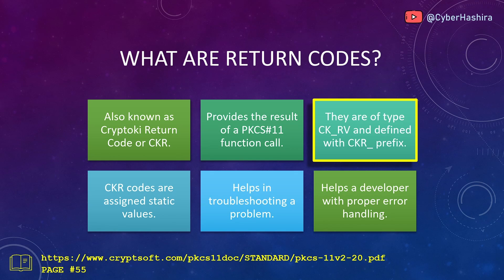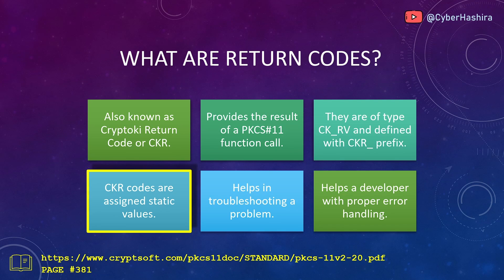Return codes in PKCS11 are of type CK_RV and are defined in the Crypto Key library using the CKR_ prefix. There is a value assigned to all CKR codes. On page 381 of the PKCS11 manual, you will see a comprehensive list of all CKR codes. On the right side, there is a hexadecimal value assigned to each of them, which can be used to identify which code was returned.